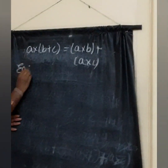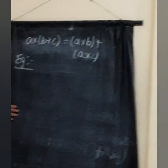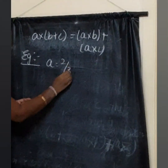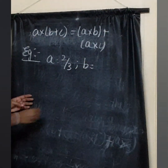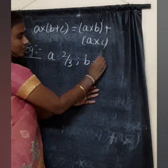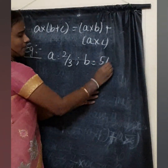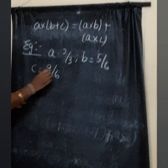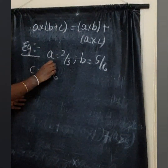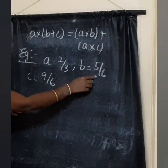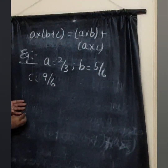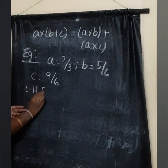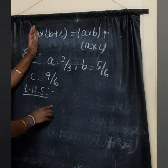Let's see an example. A is equal to 2 by 3, B is equal to 5 by 6, and C is equal to 9 by 6. First, we find the left-hand side: A into B plus C.